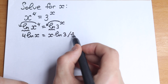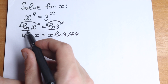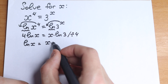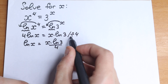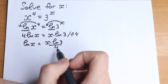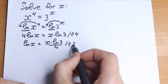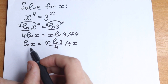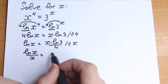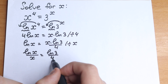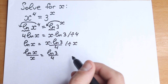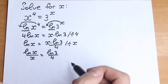Let's divide both sides by 4. If we divide both sides by 4, the 4 cancels, so we have natural log x equal to x times natural log 3 over 4. From here, we still have x on the right hand side, so let's divide both sides by x because we need to group variables on the left. So we have natural log x over x equal to natural log 3 over 4. Now variables are on the left and the constant is on the right.